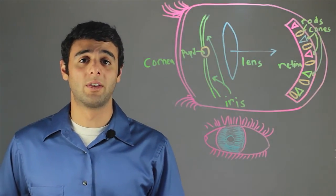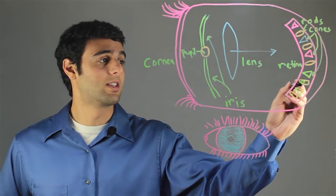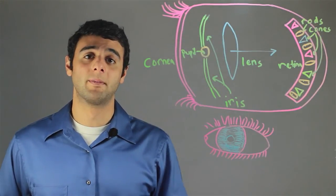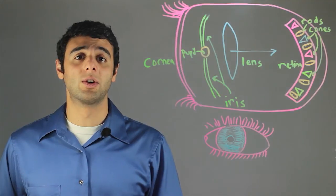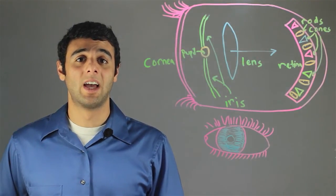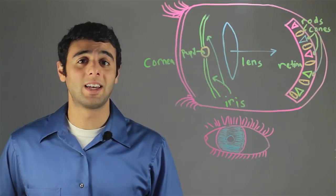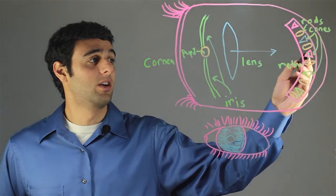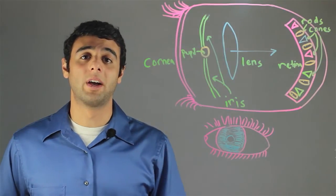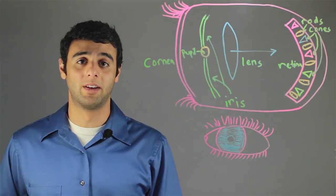Rods, on the other hand, are all the same photopigment. For this reason, they are used in dim light settings and do not produce a color image. Combined together, we have color and black and white images produced by the retina.